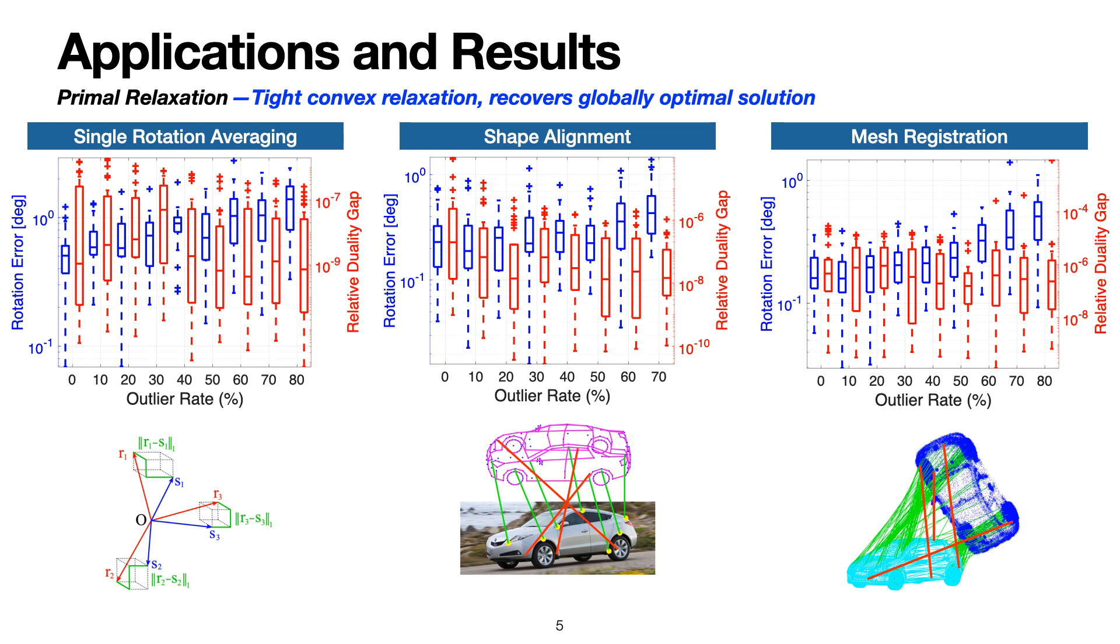We show results of primal relaxation on three problems: single rotation averaging, shape alignment, and mesh registration. These figures show that our relaxation is tight and produces accurate estimates even in the presence of many outliers across all applications.